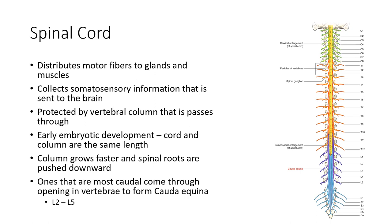Looking at L2 through L5 — the bottom portion of the lumbar — this is the space where they actually inject an epidural for childbirth. The injection goes into the cerebral spinal fluid within a sac of the dura mater. The dura mater, as discussed earlier in this lecture, is the outermost protective layer surrounding the spinal cord and brain. The injection goes all the way through into a sac within the dura mater and injects an anesthetic into the cerebral spinal fluid there.